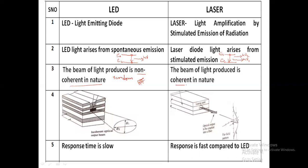For laser, the light takes a coherent form. This is because the photon energy released is of the same phase. Also, the laser structure supports an optical resonant cavity, because of which the light has more directionality. In the case of LED, there is no such optical resonant cavity. Due to this fundamental difference, LED light is non-coherent in nature, whereas laser light is purely coherent.